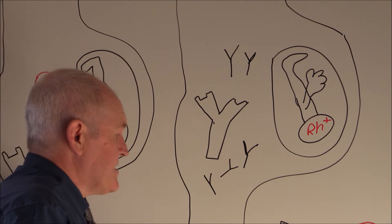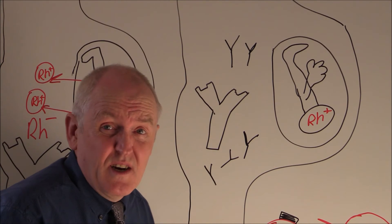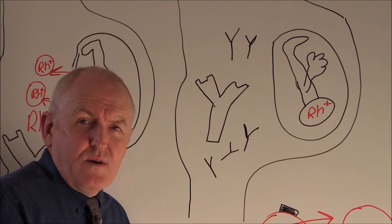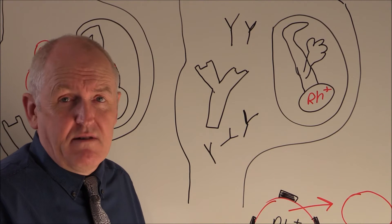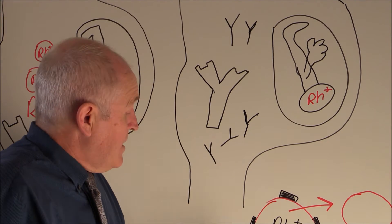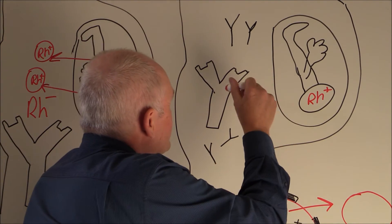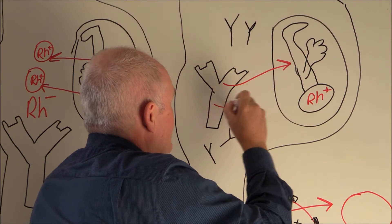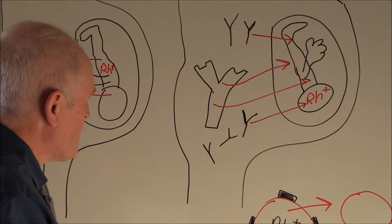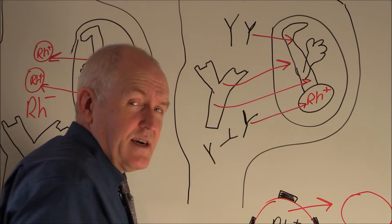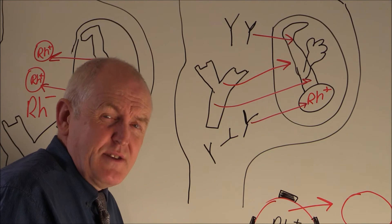The problem is that transplacental migration of antibodies does occur, and in fact it's essential — when the baby is born we want the baby to have passive immunity from the mother's antibodies against bacterial and viral diseases. But the downside is that the Rhesus factor antibodies can also migrate into the baby's circulation, where they will start to agglutinate and hemolyse the fetal red cells, so the baby will develop hemolysis.